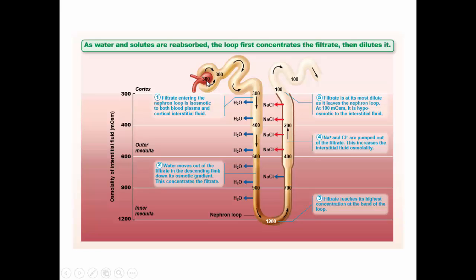Since we make the filtrate from the blood, our filtrate is going to be about 300 milliosmol. As the filtrate comes into the renal medulla, it comes in at 300 milliosmol, but the tissue surrounding the loop gets more and more concentrated — the osmolarity goes up. Since only water can leave the descending loop, water leaves by osmosis in response to the concentrated tissue. When we're down at the bottom, that filtrate has the same osmolarity as the tissue around it: 1200 milliosmol. As we go back up, water can't get out but sodium chloride can, so sodium chloride comes out as we get into less concentrated areas. We end up producing a filtrate that is more dilute than what we started with.